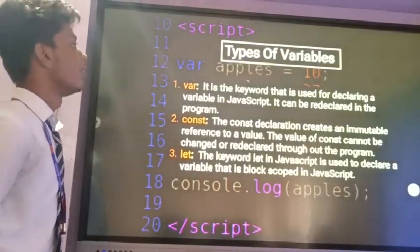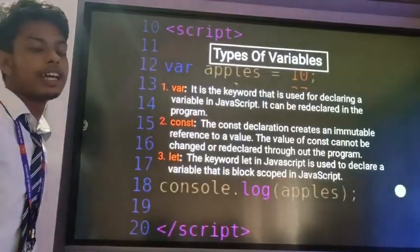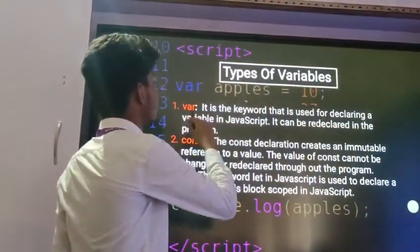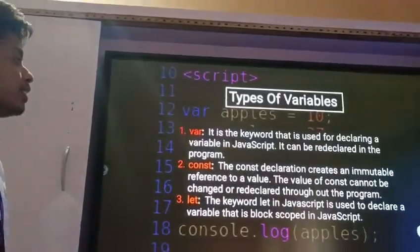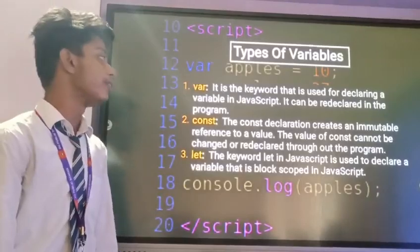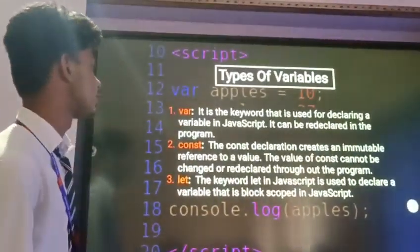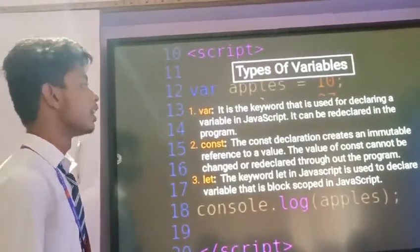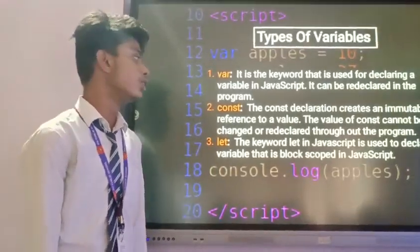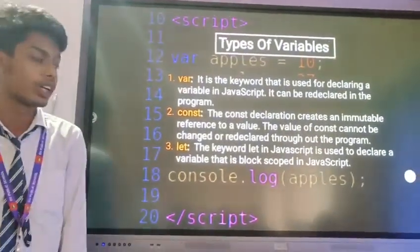Now I will explain types of variables. There are mainly three types of variables. First one is var. It is a keyword that is used for declaring a variable in JavaScript. It can be redeclared in a program. Then second one is const. The const declaration creates an immutable reference to a value. The value of const cannot be changed or redeclared throughout the program.